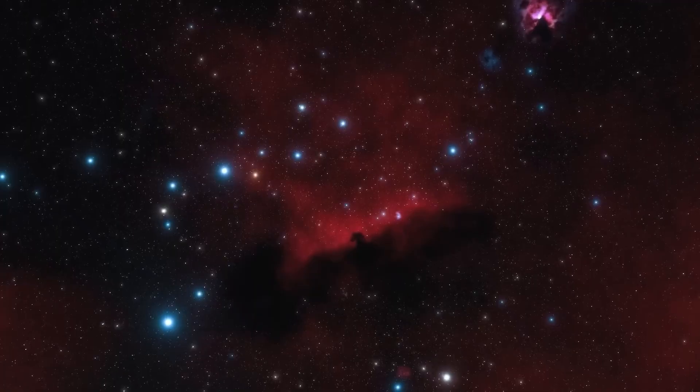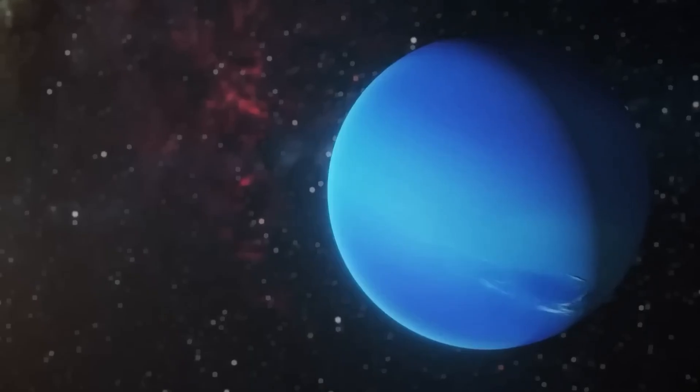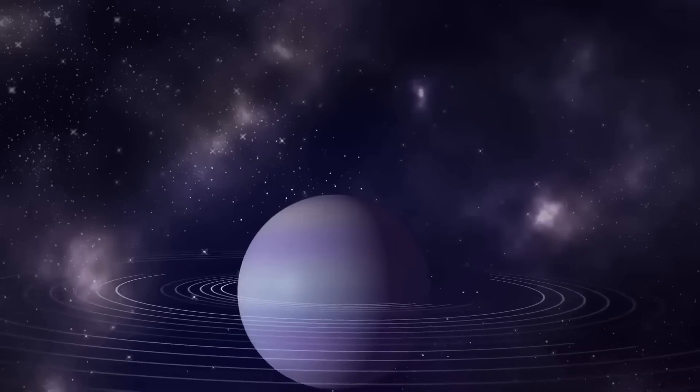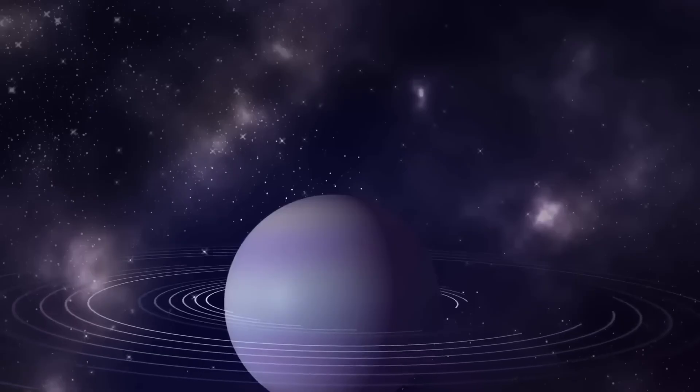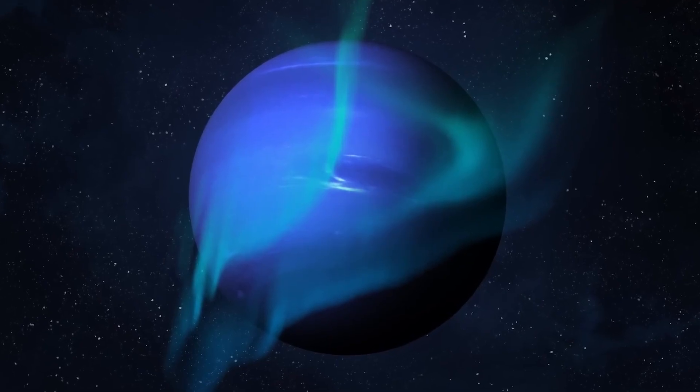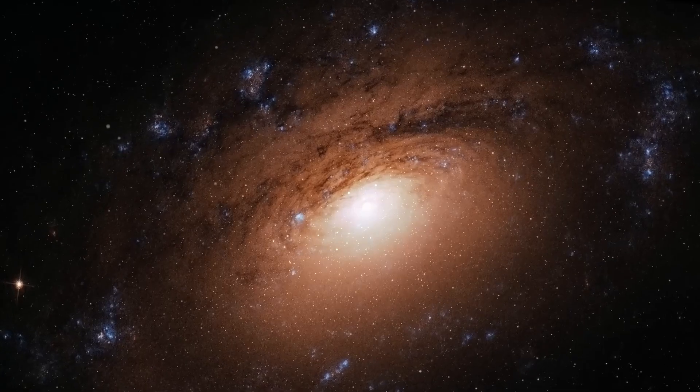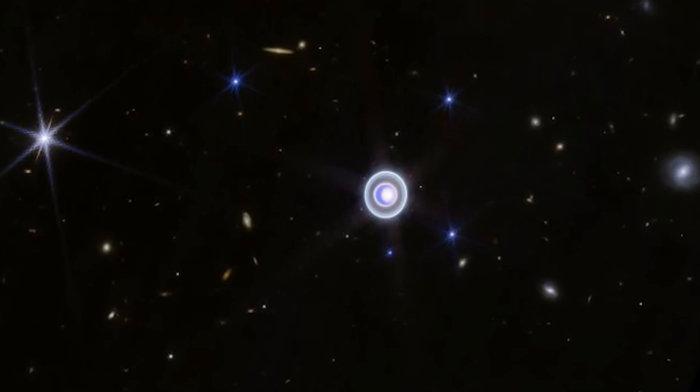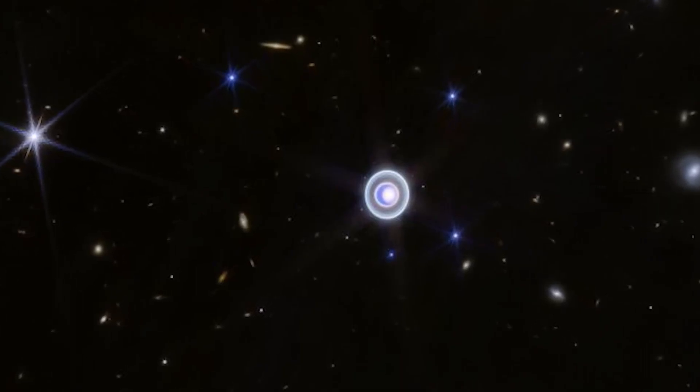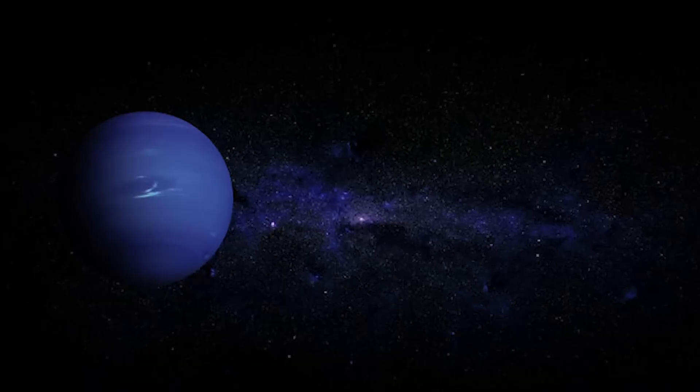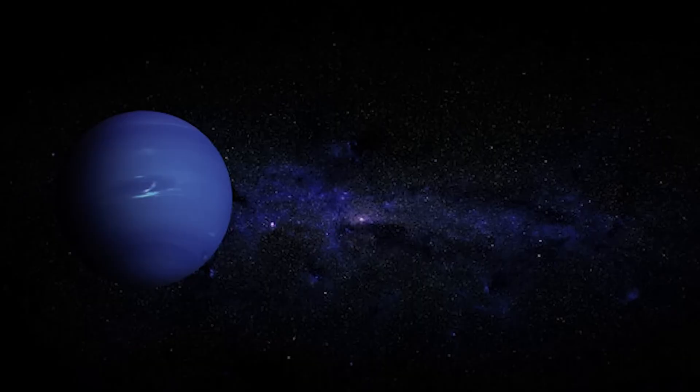Every time an impact happens elsewhere in the solar system, it's a warning and an opportunity. For scientists, Neptune's collision is more than a distant spectacle. It's a chance to study in real time what happens when a large space rock slams into a planet's atmosphere, and those lessons could one day save Earth. Webb's data shows how shock waves travel, how energy disperses, and how an atmosphere cushions or fails to cushion the blow. By comparing Neptune's response to what we'd expect on Earth, scientists can refine impact models, predict damage zones, and improve early warning systems for when the next threatening object is spotted on a collision course with our planet.